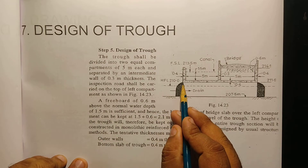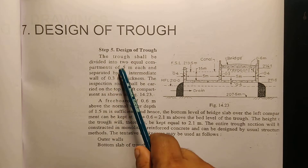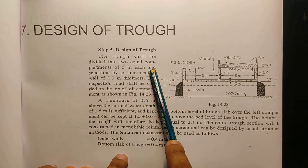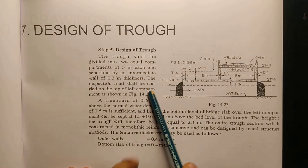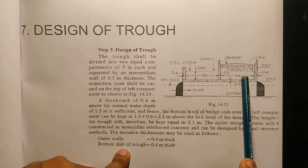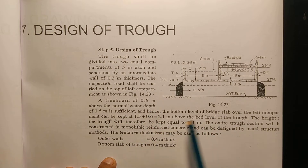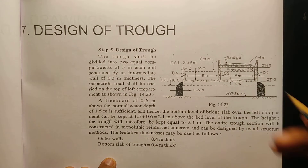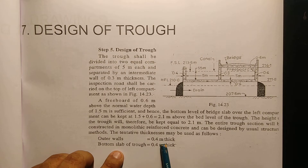The third slab is 1.4 meters. A freeboard of 0.6 meters is provided for a normal water depth of 1.5 meters, making the total water width 2.1 meters. The entire section is converted into monolithic reinforced concrete. This is the bottom of the slab.